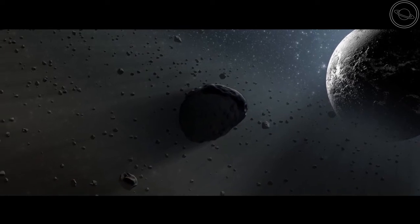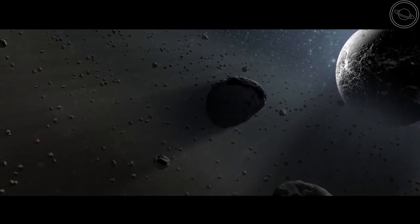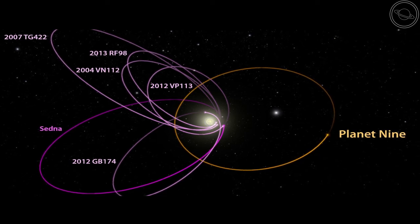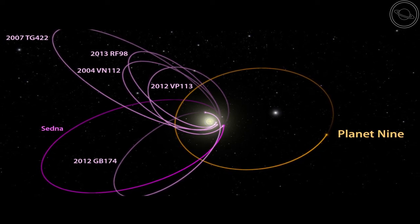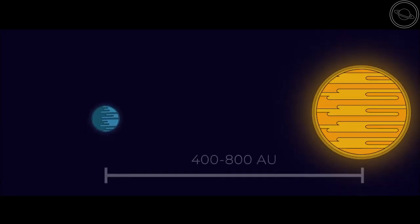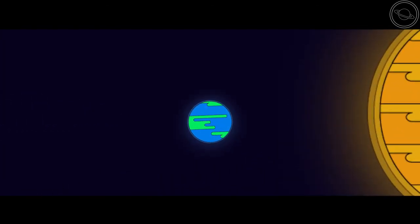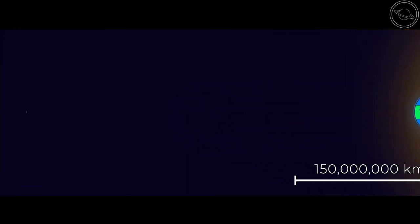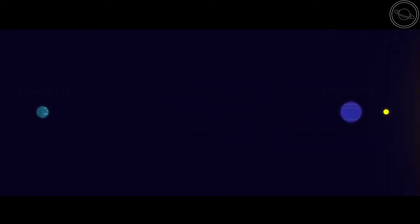So here is what we know about Planet 9, if it exists. The planet orbits on the opposite side of the solar system, to the clustered ETNOs, and has a highly elliptical orbit. This orbit is around 400 to 800 astronomical units from the sun. An astronomical unit is the distance that Earth orbits the sun, or 150 million kilometres. For another reference, this planet orbits at least 13 times that of Neptune's orbit, and takes the planet up to 20,000 years to complete.